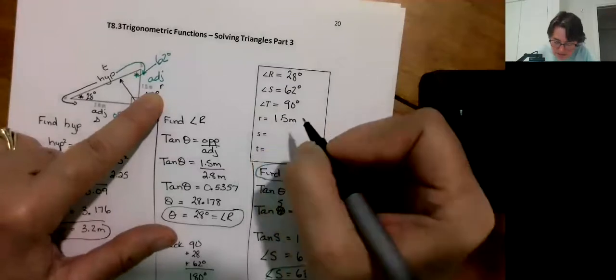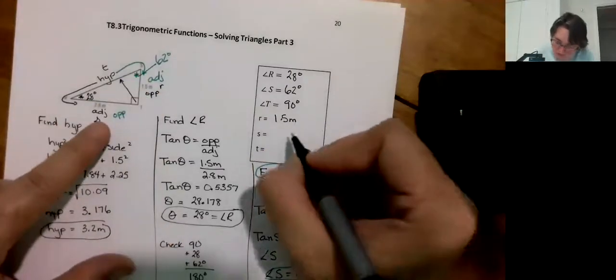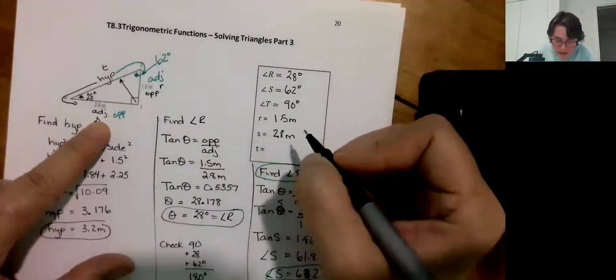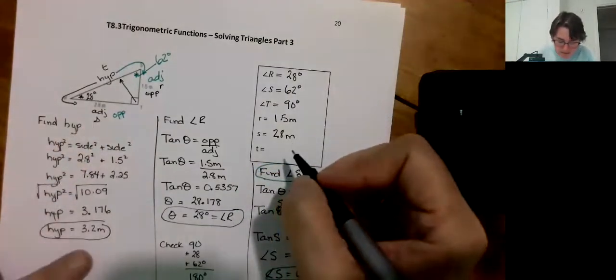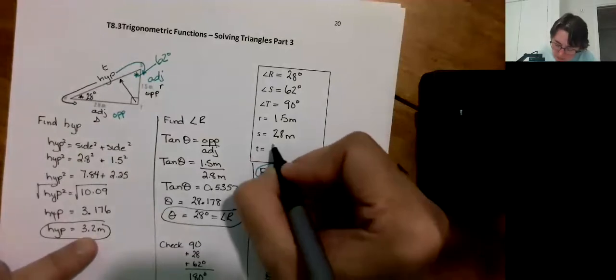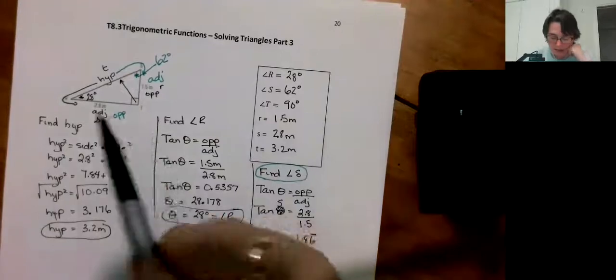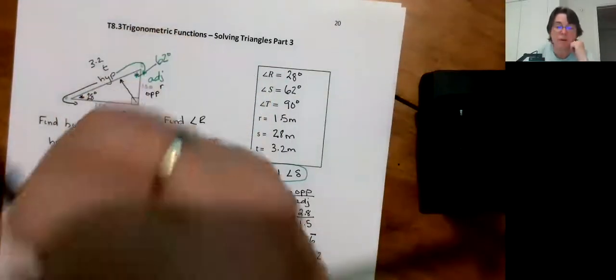Little r is 1.5 meters. Not very exciting, kind of just copying that off. Little s is 2.8 meters. And t, which is the one we actually had to calculate, was 3.2 meters. I'm going to put the 3.2 there.